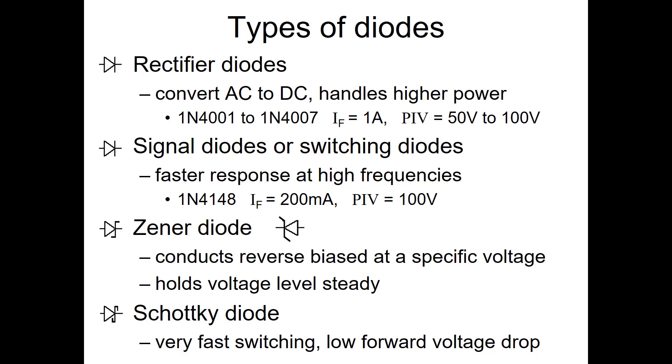Schottky diodes are very fast switching diodes. They have a lower forward voltage drop required, and so they can switch between on and off much quicker. Notice the different symbols, they're all similar. Zener diode, you can kind of consider the symbol looking sort of like a letter Z, if it's facing the right direction. Schottky, like the letter S, to help you remember that.